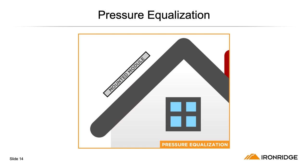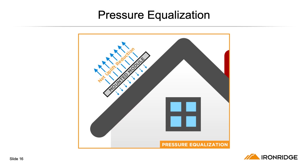One of the major discoveries found from this wind tunnel testing included pressure equalization. It turns out that when you incorporate a solar system on a roof, you create a barrier which creates a pressure equalization between the lower surfaces of the array and the top surfaces. The pressure differential between the two actually counteracts the uplift forces, ultimately decreasing the net wind pressures.